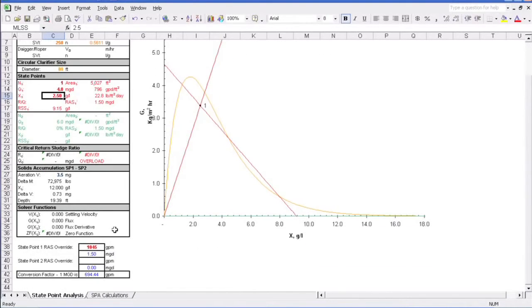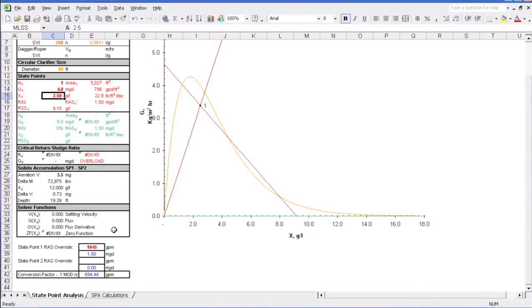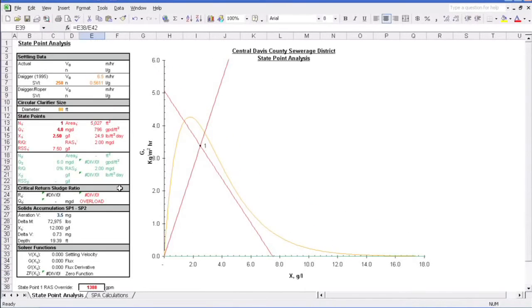Say we actually have a little bit more capacity in our RAS pumps and can turn those up to 2MGD. Well, does it help? Yep. As we discussed, increasing the RAS flow results in a steeper underflow rate line, and we're back in good shape. Good job. Crisis averted.